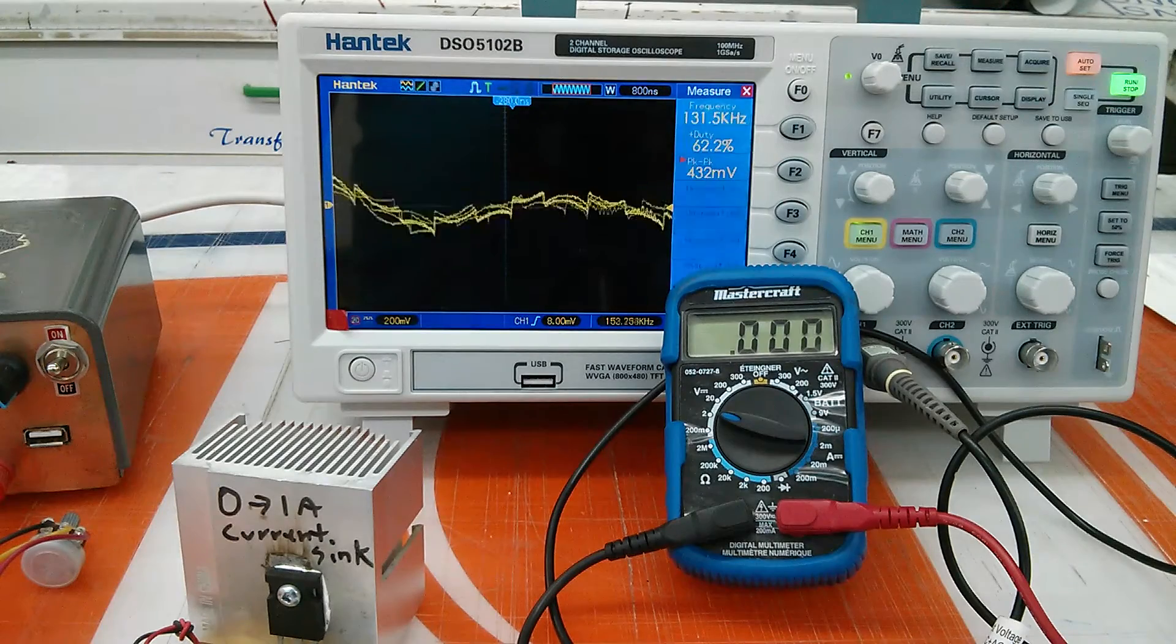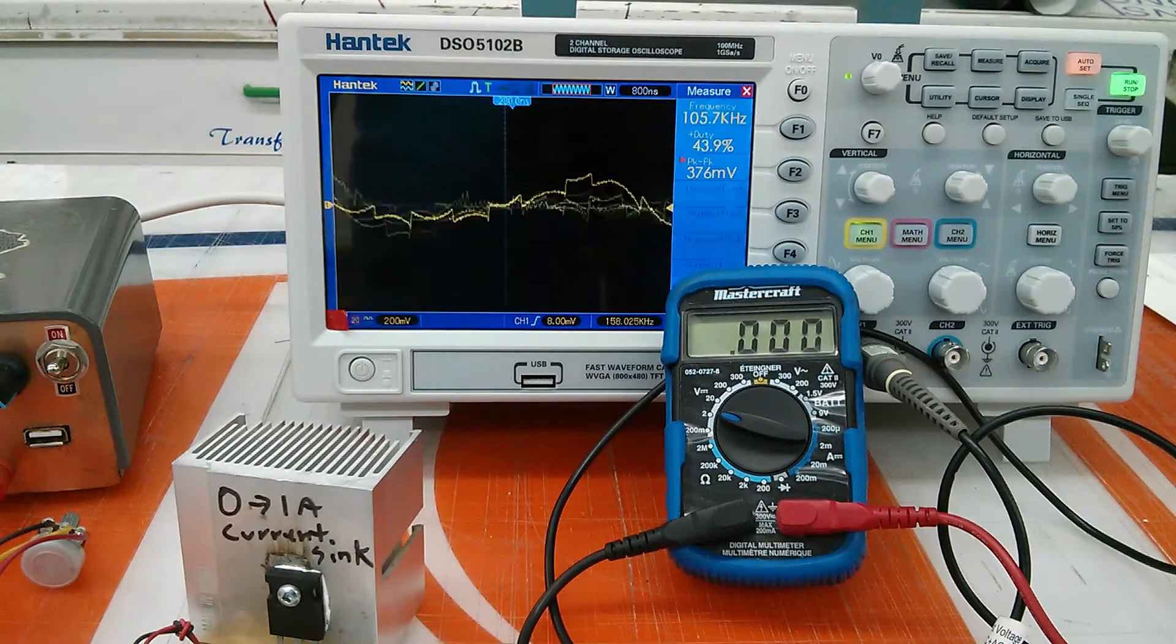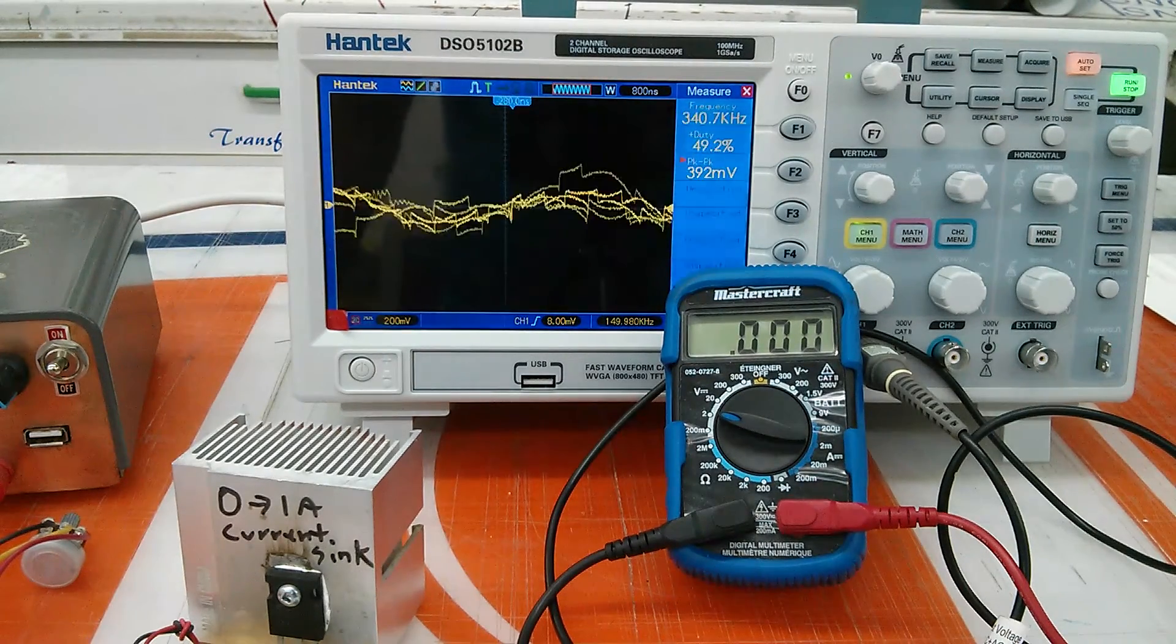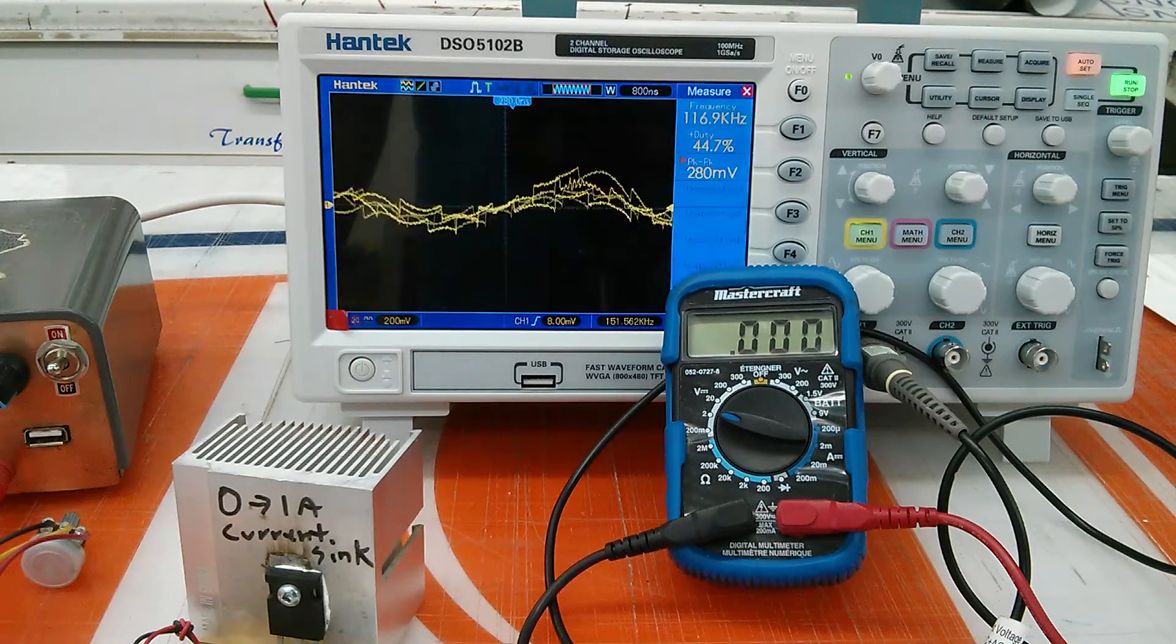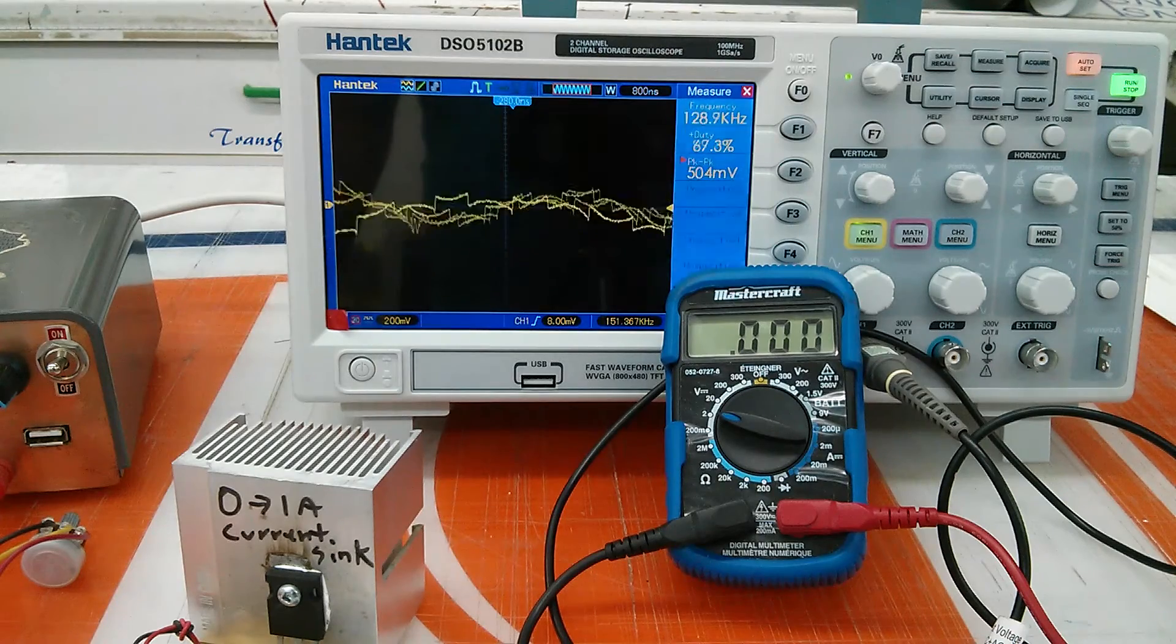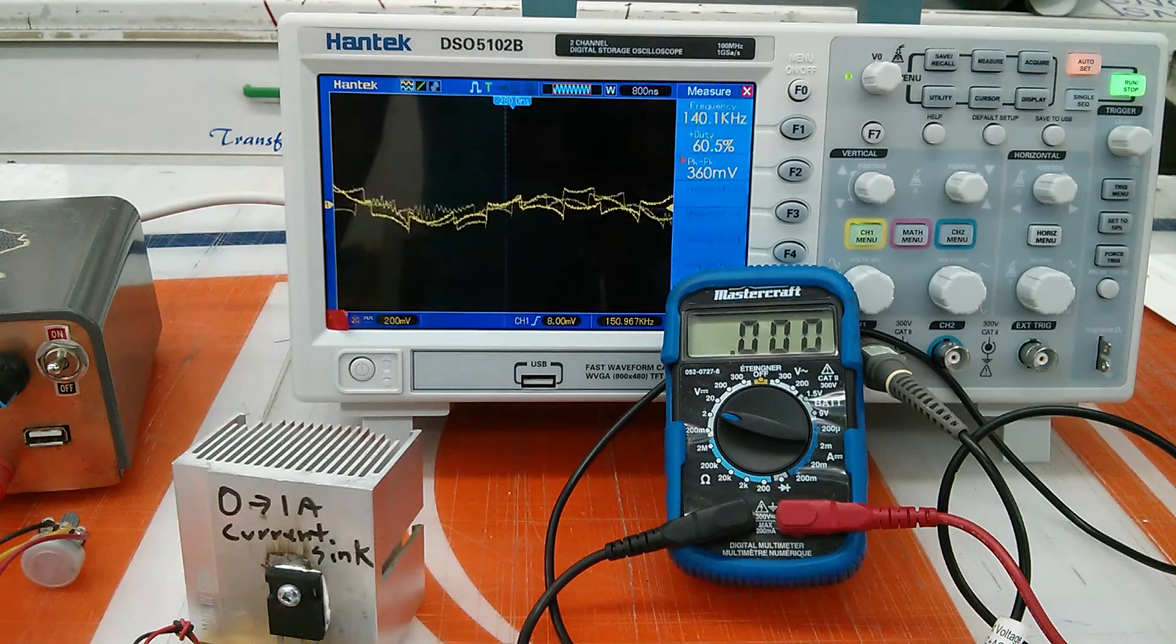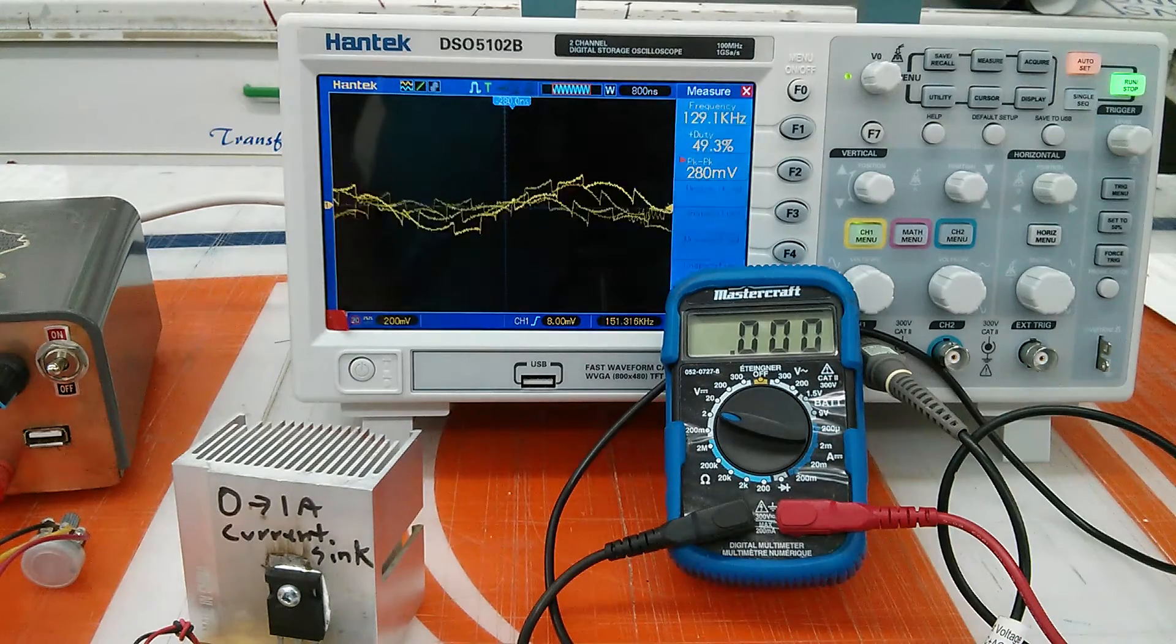I would say that this thing probably could handle doing 2 amps. Unfortunately, I don't have a larger current sink. I'm planning on building one, but I haven't at this point. And I don't have any other dummy loads to hook up.